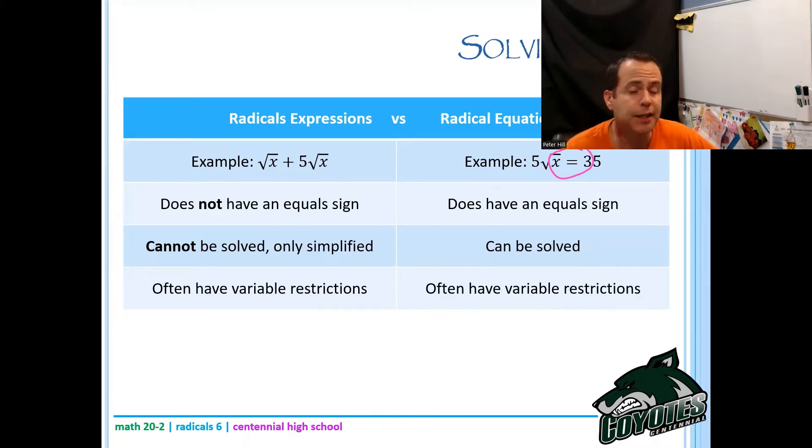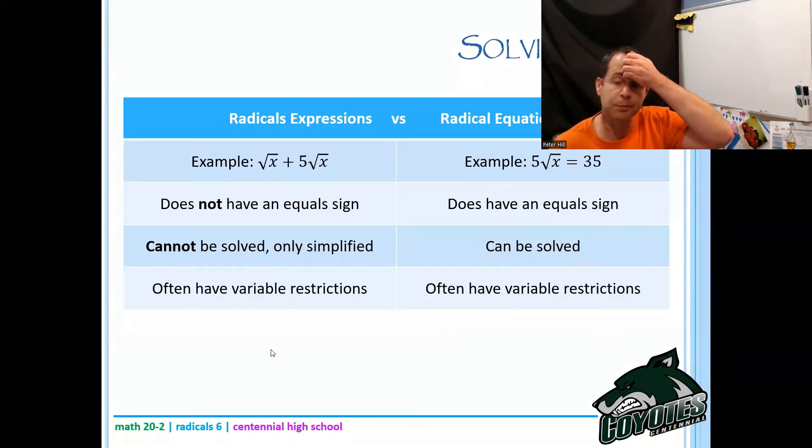The expression cannot be solved, only simplified. Whereas the equation can be solved. We can find that value for x that works. And then often we'll have variable restrictions for both of them, both expressions and equations. We have to kind of think through those restrictions.